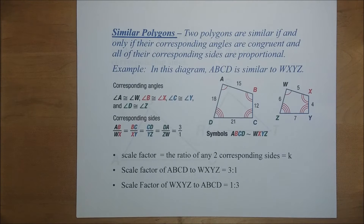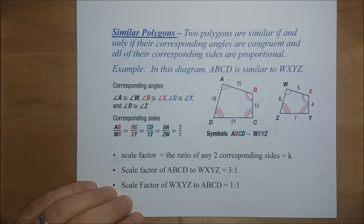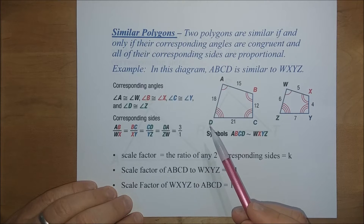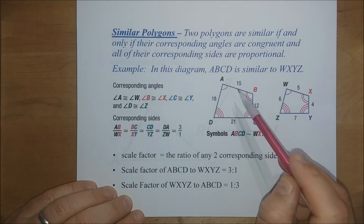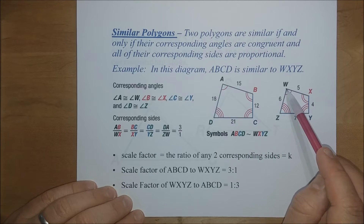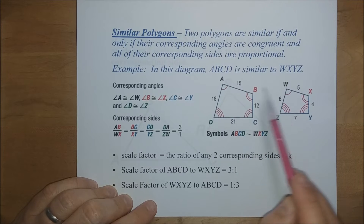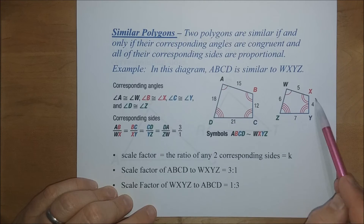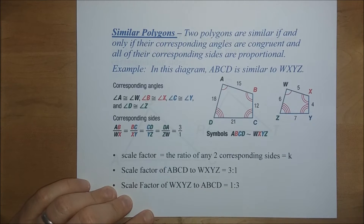Two polygons are similar if and only if their corresponding angles are congruent and all their corresponding sides are proportional. In this example, polygon ABCD is similar to polygon WXYZ. We know this because the corresponding angles are congruent: A is congruent to W, B to X, C to Y, and D to Z, and all of their sides happen to be proportional.